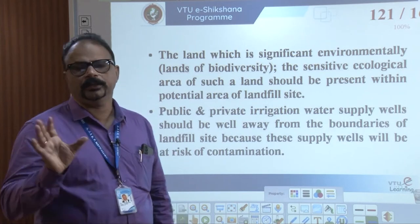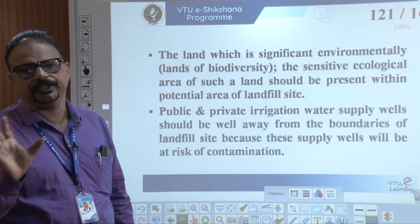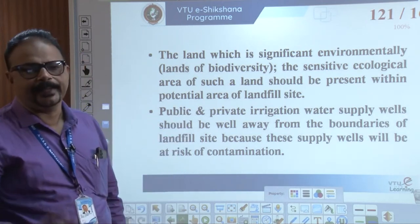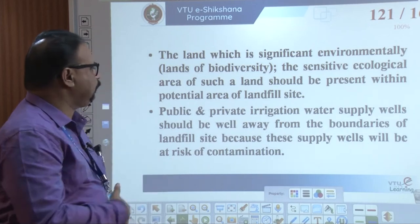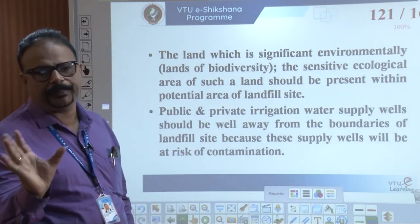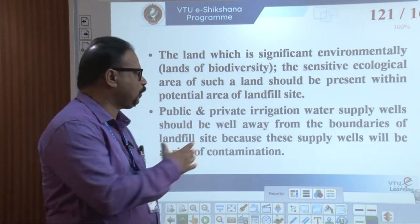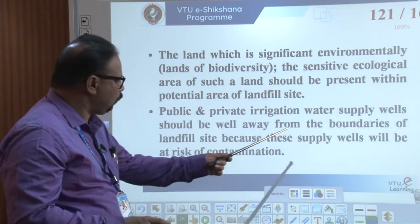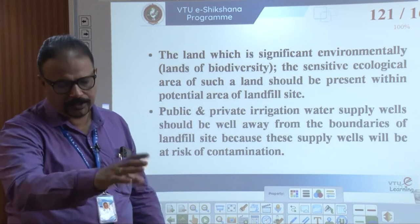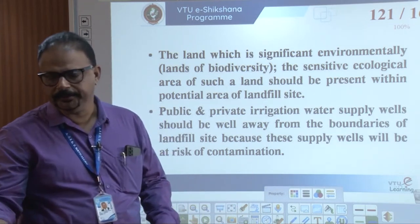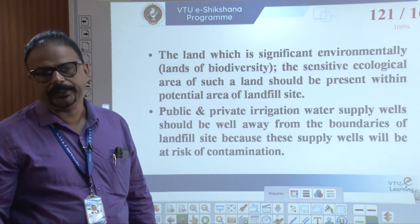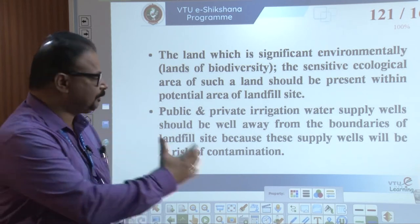The environmental condition of the land — ecological area and land present within the potential area — is also important. Regarding irrigation: if there is agriculture or a public or private water supply well nearby the site, that is rejected. There is a risk of water contamination if the dump yard is near the water supply source — the leachate may move to the water and contaminate it.